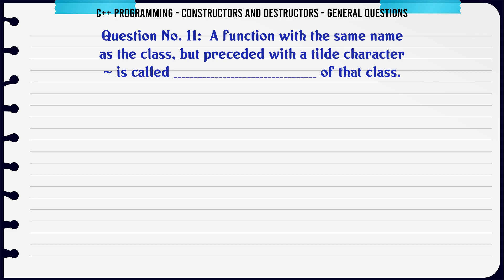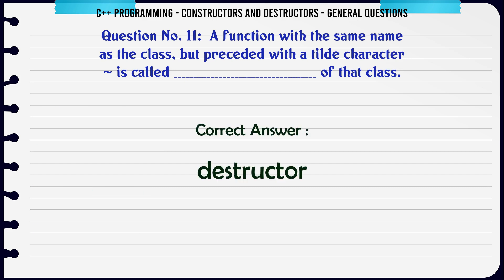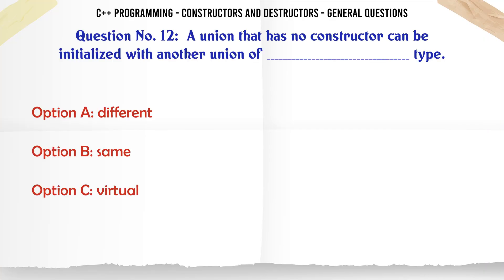A function with the same name as the class but preceded with a tilde character is called what of that class? A. Constructor. B. Destructor. C. Function. D. Object. The correct answer is Destructor.